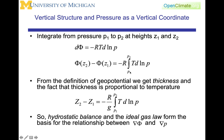We can integrate this equation from one pressure to a second pressure, and we get that the geopotential difference z2 minus z1 is equal to the integral of T d(log p). From the definition of geopotential, we get thickness, and the fact that thickness is proportional to the average temperature between two pressure levels. This hydrostatic balance and the ideal gas law will be the basis for the relationship between geopotential, the gradient of geopotential, and the gradient of pressure.